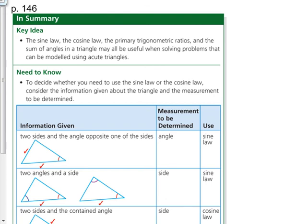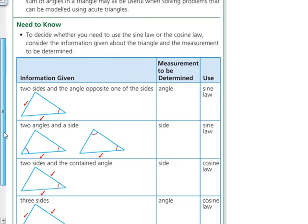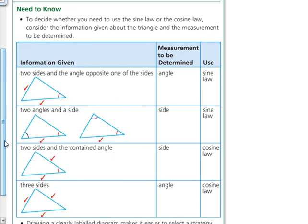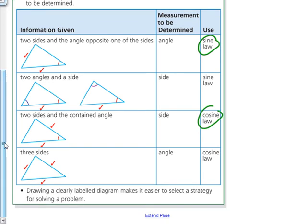So in summary, this summary box is really great, you should probably take a look at it. It's on page 146 of your textbook. The sine law, the cosine law, and the primary trig ratios and the sum of angles in a triangle may all be useful when solving problems that can be modeled using acute triangles. To decide whether you need to use the sine law or the cosine law, consider the information given about the triangle and the measurement to be determined. So use this chart to figure out which law you need to use. Drawing a clearly labeled diagram makes it easier to select a strategy for solving a problem.